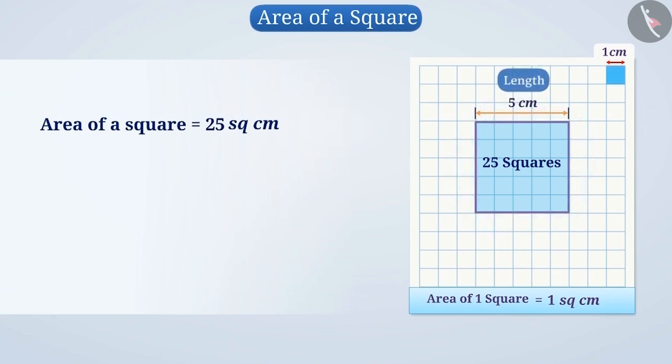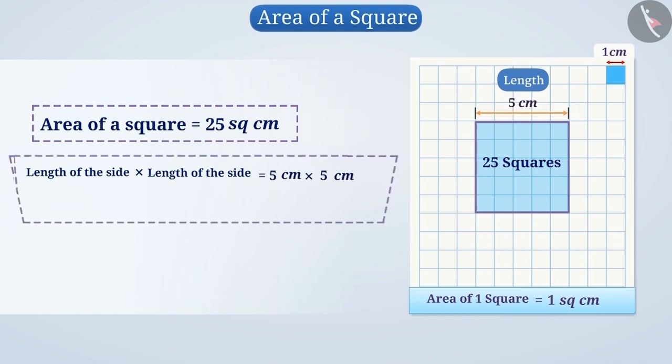What do we infer from the length of the sides and the area of this square? Think for a while. If we multiply the length of the side by itself, we get 5 cm × 5 cm equals 25 cm², which is the area of this square.